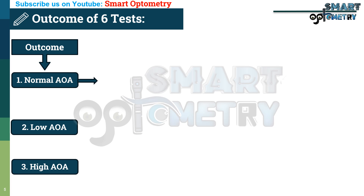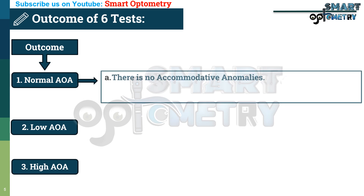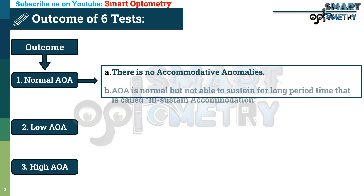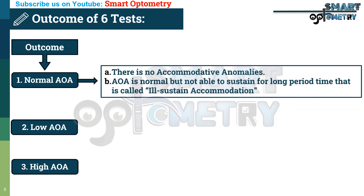When amplitude of accommodation is normal, there are two possibilities: (a) there are no accommodative anomalies, or (b) amplitude of accommodation is normal but the patient is not able to sustain it for a long period of time — that is called ill-sustained accommodation.